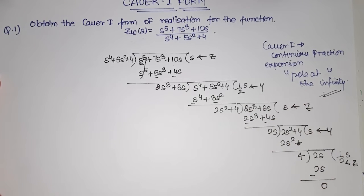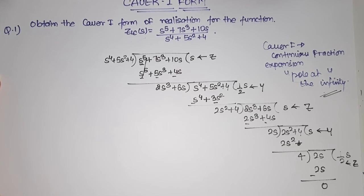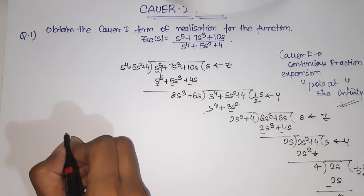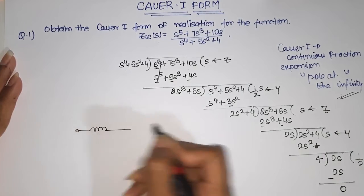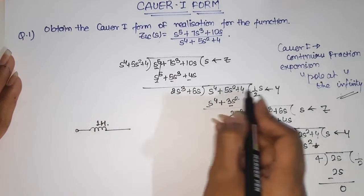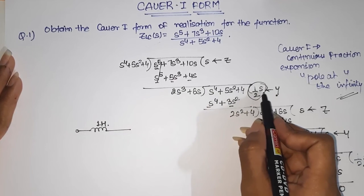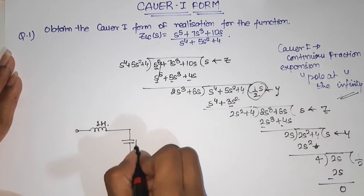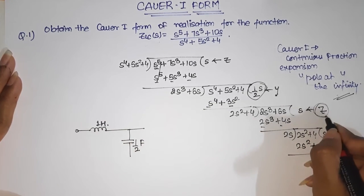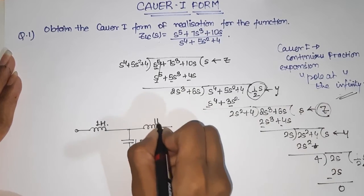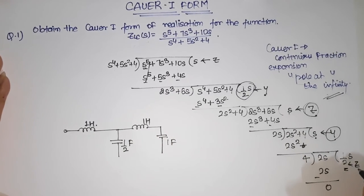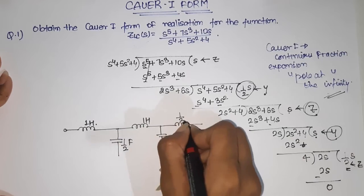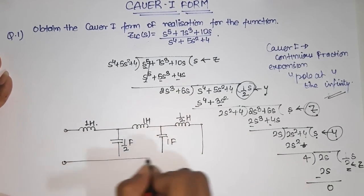For ladder realization, impedances are connected in series and admittances are connected in parallel. The first Z component is s, which represents an inductor of 1 henry in series. The Y component is half times s, representing a capacitor of half farad in parallel. Next Z is s, another inductor of 1 henry in series, then Y is s giving a capacitor of 1 farad in parallel, and finally Z is half, representing an inductor of half henry in series.